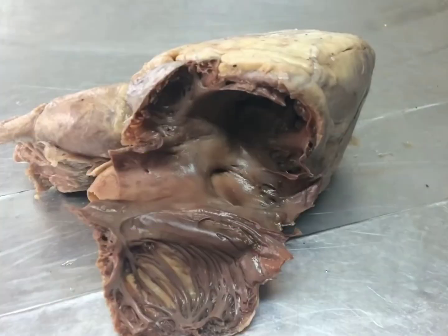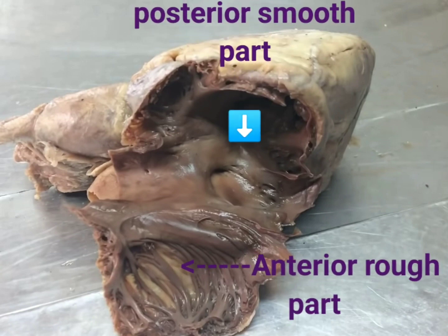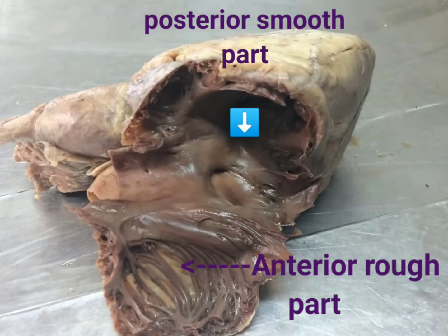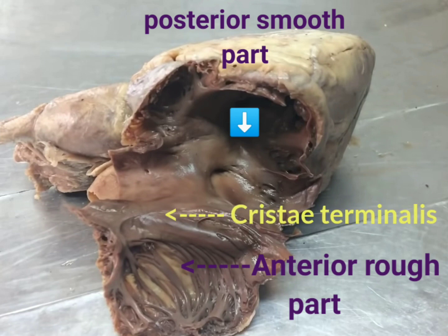The interior of the right atrium is divided into the anterior rough part, or pectinate part, and the posterior smooth part. The posterior part is also called the sinus venarum because evolutionarily it is derived from the sinus venosus of quadrupeds. The smooth part is separated from the rough part by an internal partition called the crista terminalis. The external partition is called the sulcus terminalis.